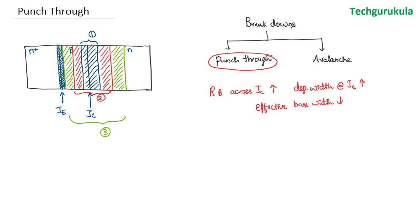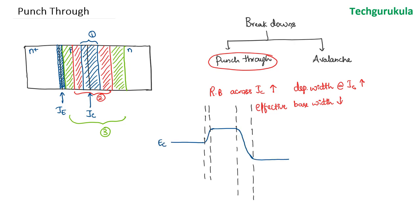In order to understand why the current increases rapidly, it is easy to understand from energy band diagrams. So let me show the energy band diagrams here. This energy band diagram corresponds to the first case, and I am showing only the EC — the bottom edge of the conduction band. This is the N-plus region, this is the P region, and this is N — emitter, base, and collector.